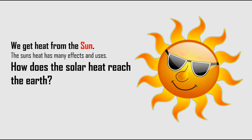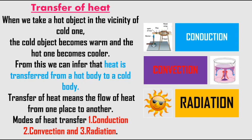We get heat from the sun, which has many effects and uses. But how does this heat reach us on Earth? The reason is transfer of heat. When we place a hot object near a cold one, the cold object becomes warm and the hot one becomes cooler — heat is transferred from a hot body to a cold body. There are three ways of transfer of heat: conduction, convection, and radiation.